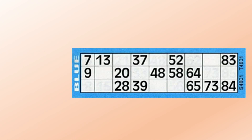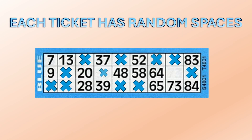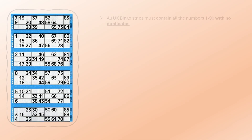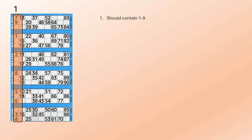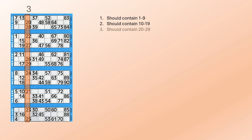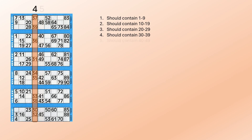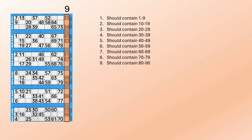Each ticket has a random pattern — it has spaces randomly placed, never the same. And each column has no more than two numbers per column. All the bingo strips must contain all the numbers 1 to 90 with no duplicates. Column 1 should contain numbers 1 to 9, randomly placed, no duplicates. Column 2 should contain numbers 10 to 19. Column 3 should contain numbers 20 to 29, and so on, up through column 8. Then column 9 contains the numbers 80 to 90.